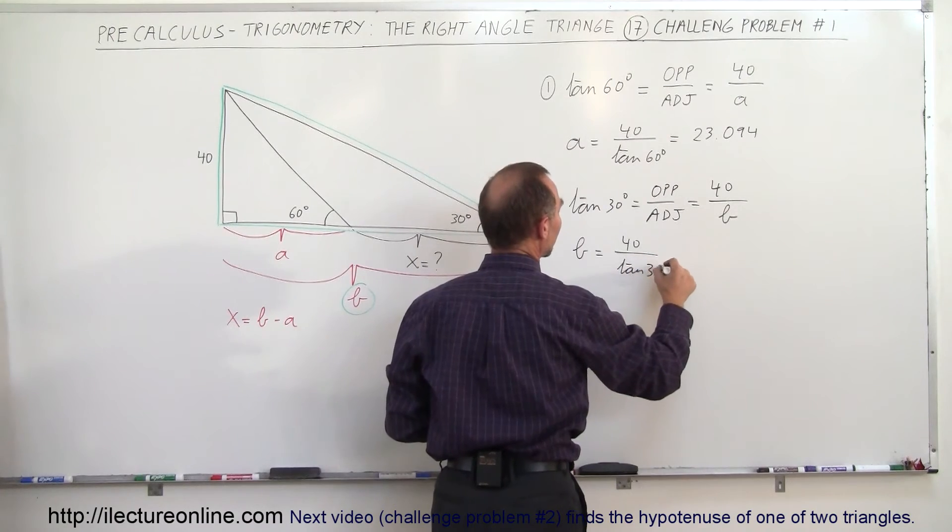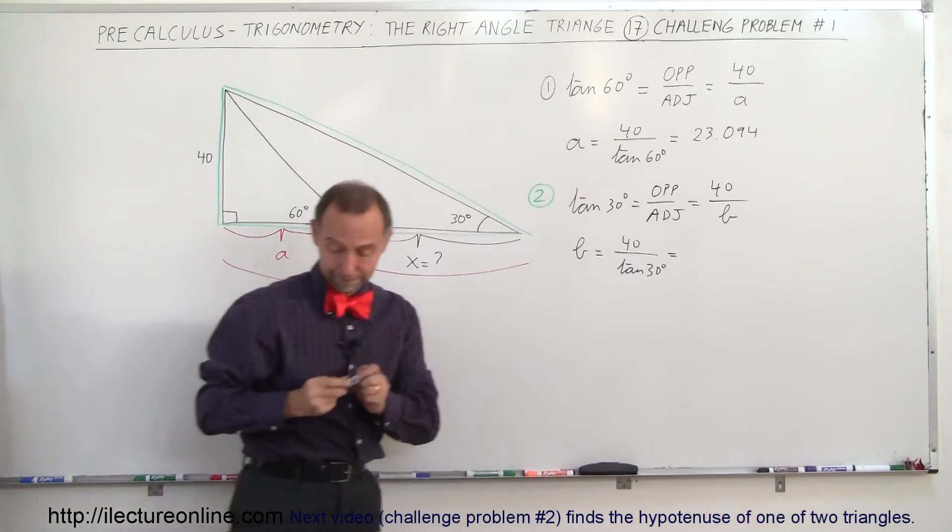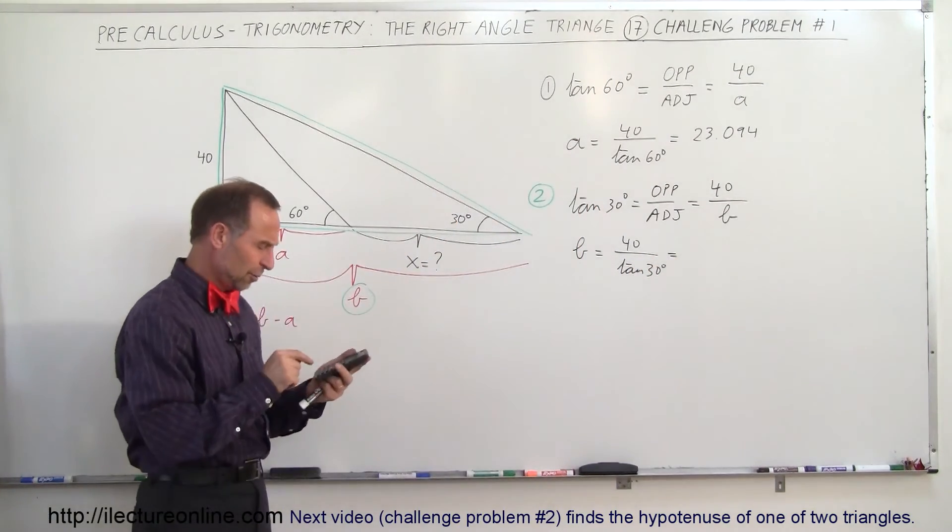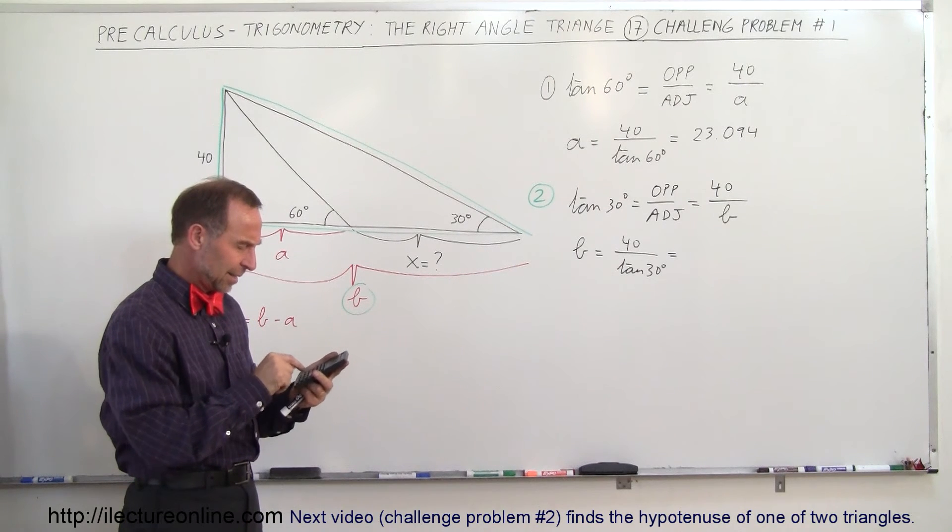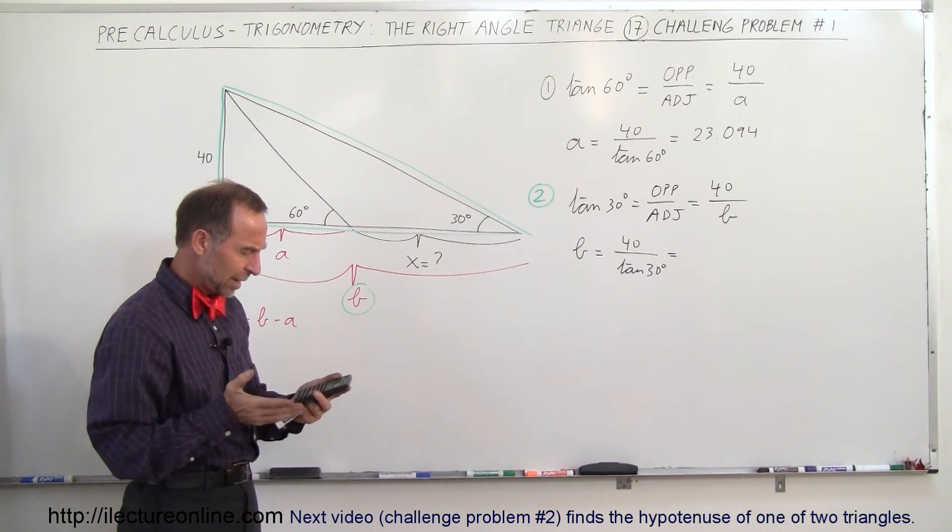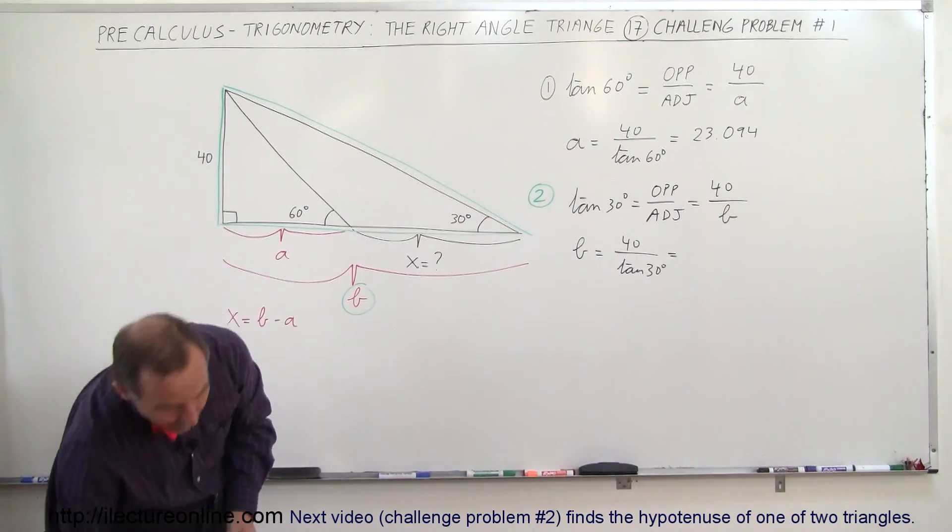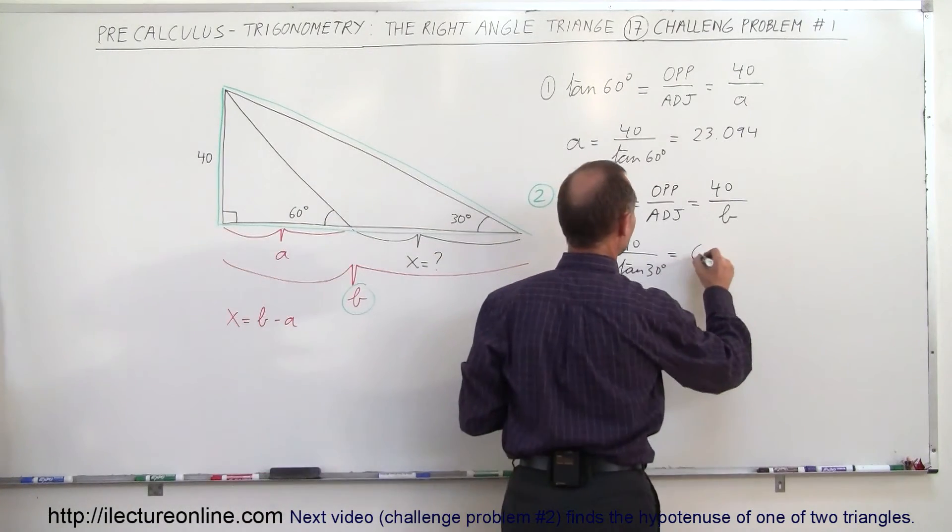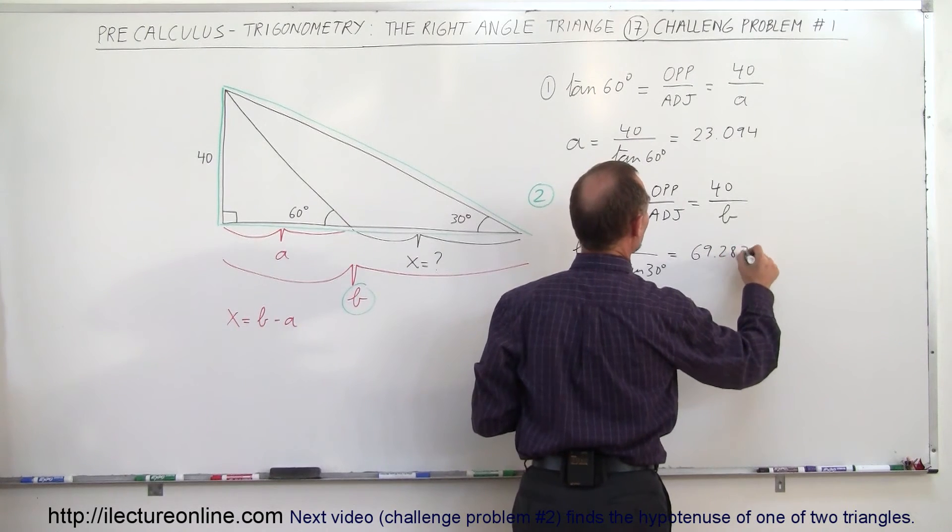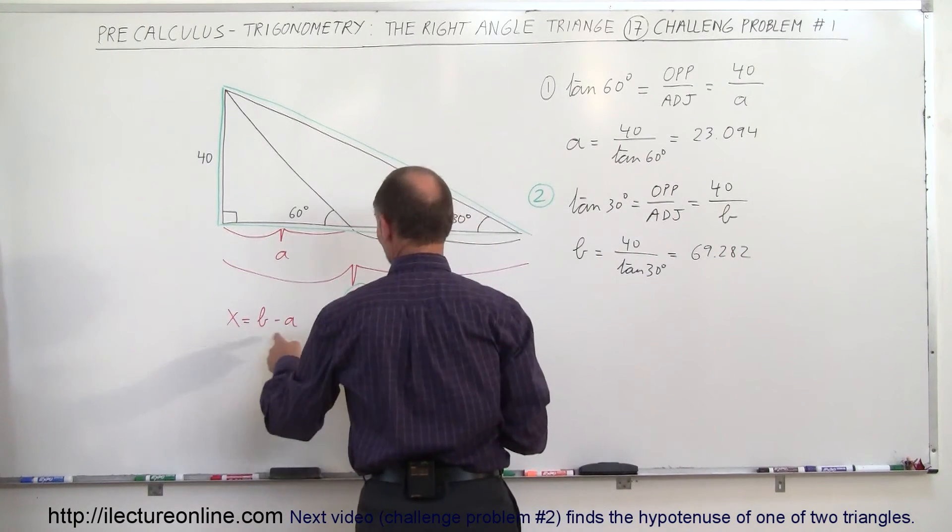And then again we grab our calculator. So we go 40 divided by the tangent of 30, and we get 69.282. All right, so that's 69.282.